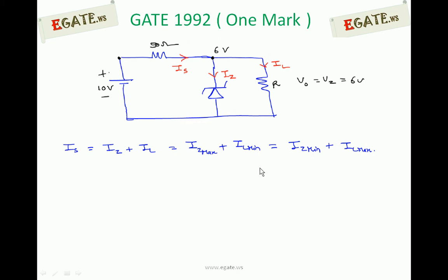So out of these three equations, which should we use? We are interested in calculating minimum value of R. For constant output voltage, R minimum implies IL maximum. So we must use an equation consisting of IL maximum. We will use IS equals IZ minimum plus IL maximum.